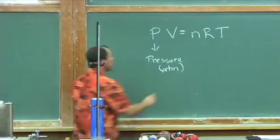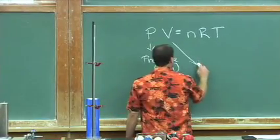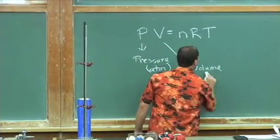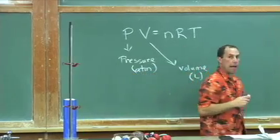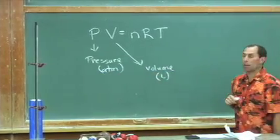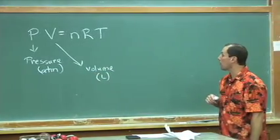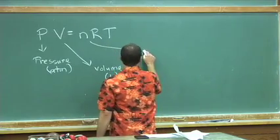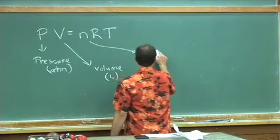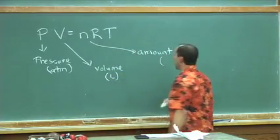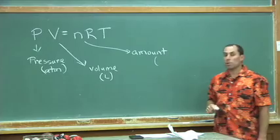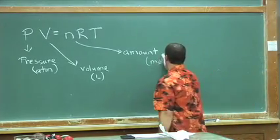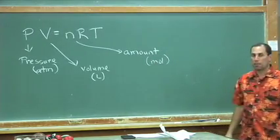V is volume. It's extremely convenient to use L — big L — for liters as our unit of volume. N is the amount, and the unit we use to count things is moles. I'm going to put in MOL for moles.